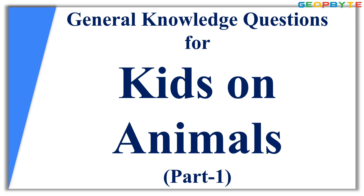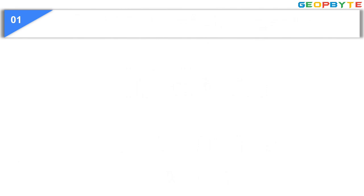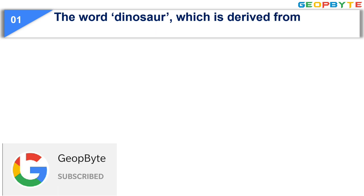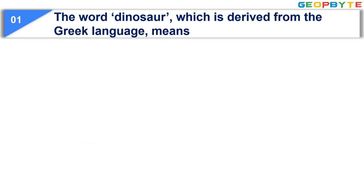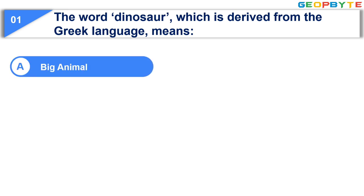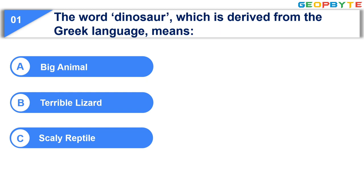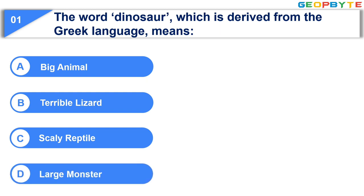Part 1. The first question is: The word dinosaur, which is derived from the Greek language, means — Option A: Big animal. Option B: Terrible lizard. Option C: Scaly reptile. Option D: Large monster. Your time starts now!